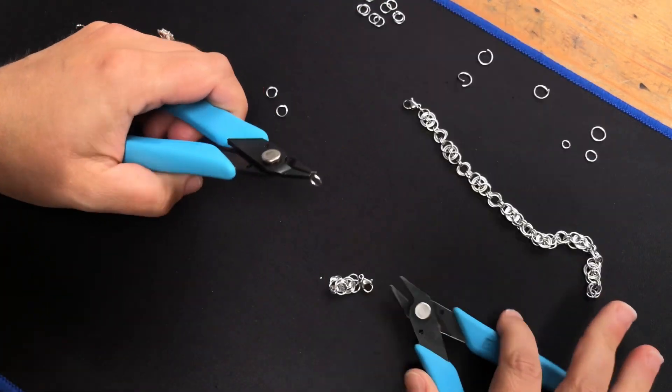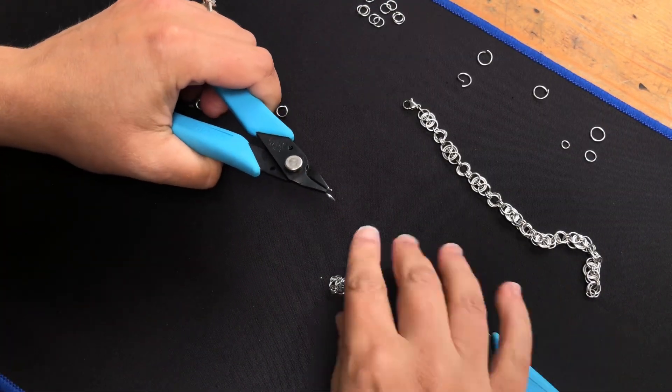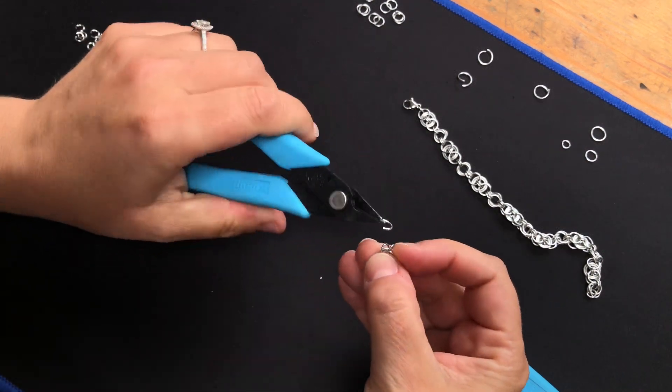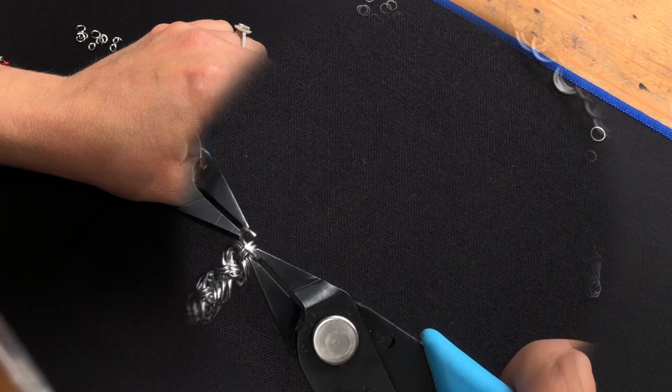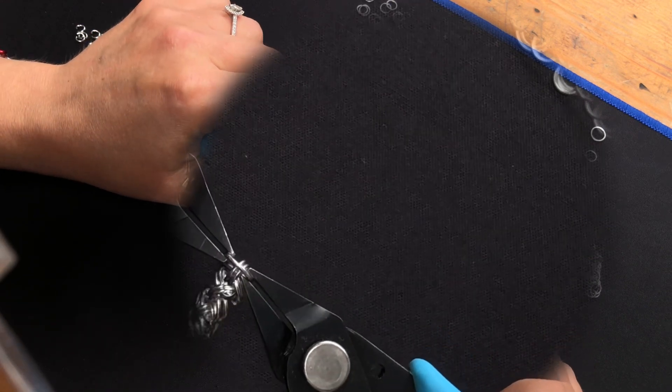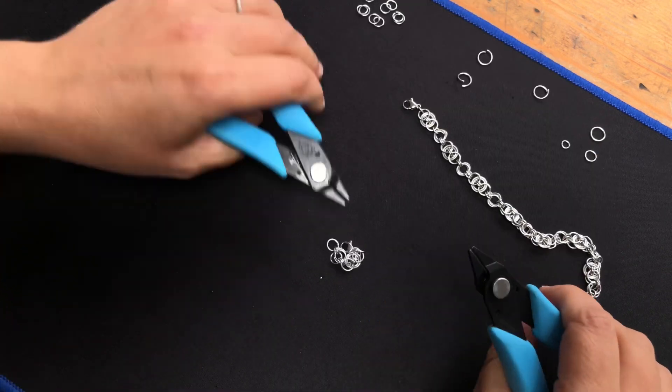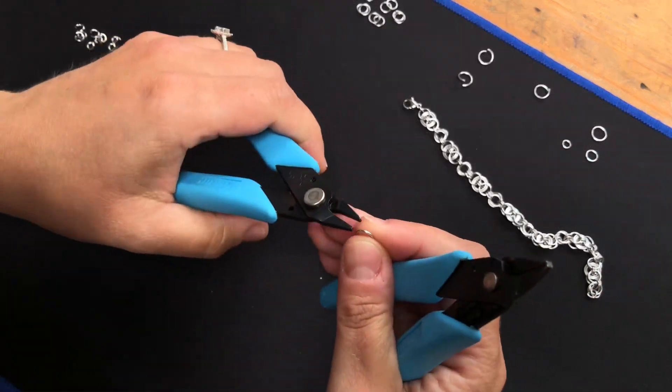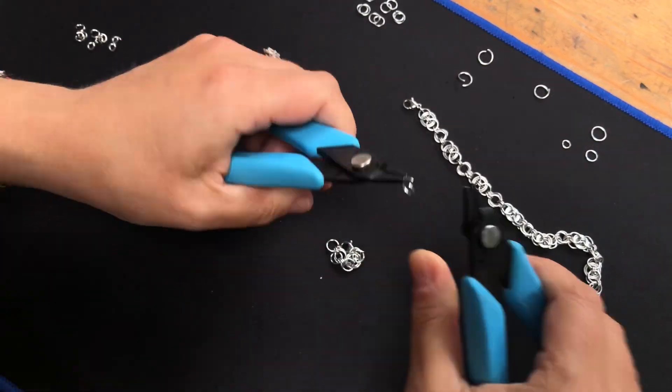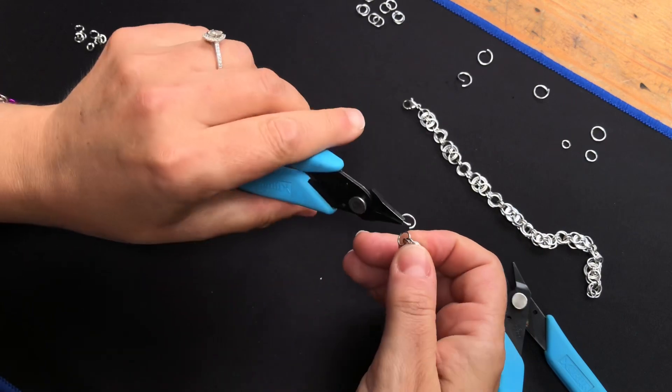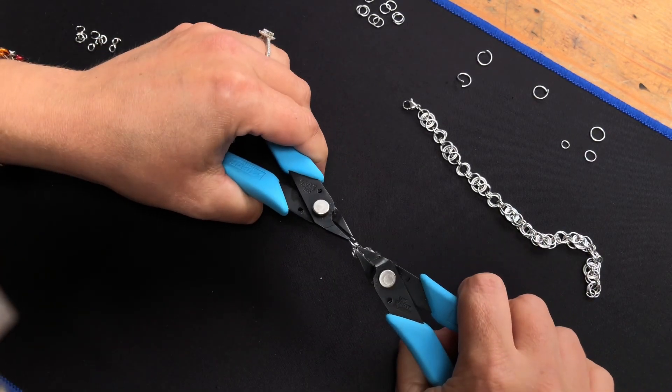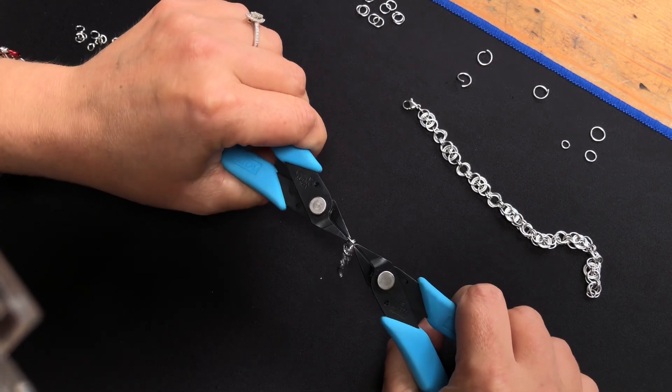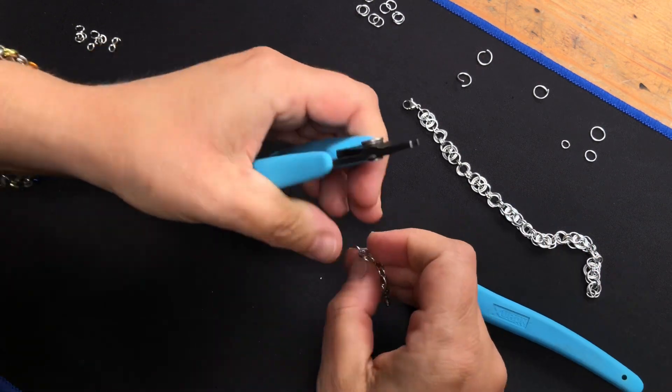And then we're going to start with our helm again. So take a medium ring, place it through the two smalls. And then another one. Let's take an open one. Let's do that again.